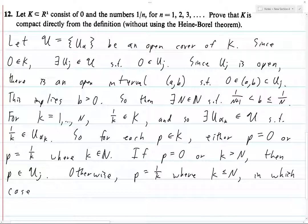Thus, Uj, and then U alpha 1 through U alpha capital N, the capital N is a finite subcover. And so given any arbitrary open cover of K, we have found a finite subcover, and hence K is compact.